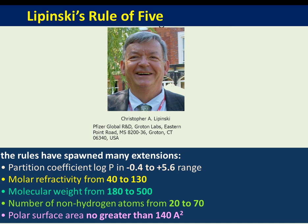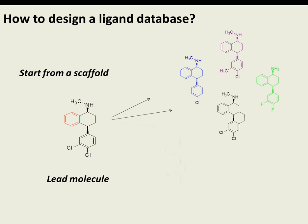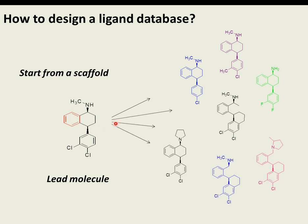One popular method to design a ligand database is to start from a scaffold. If you already have a lead molecule, you take its framework and prepare various analogues related to your compound. This allows you to probe the structure-activity relationships of each atom and position, optimizing the biological activity of the lead molecule. This methodology is especially popular in ligand-based drug design.